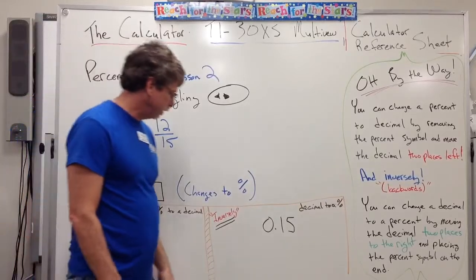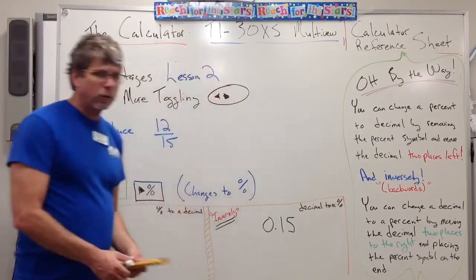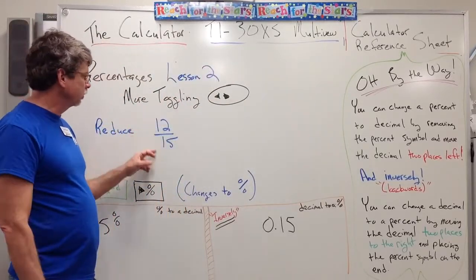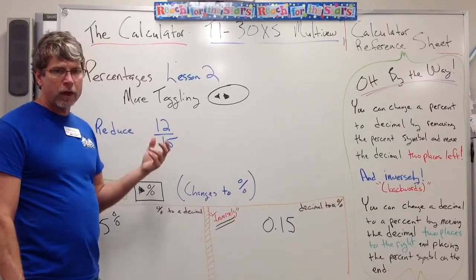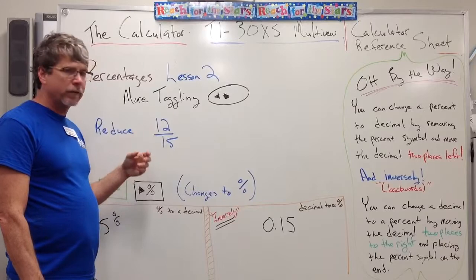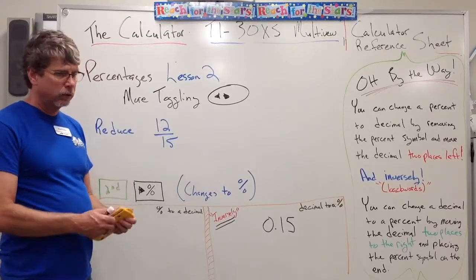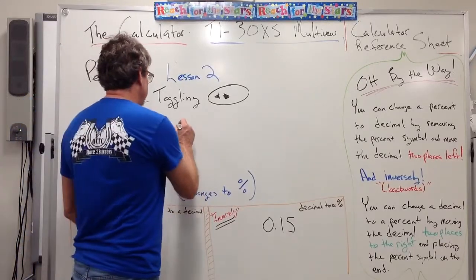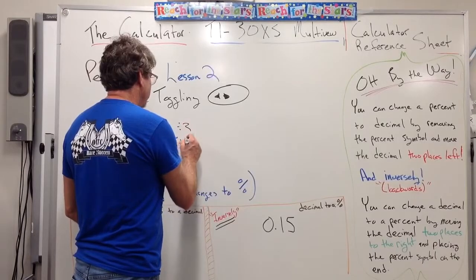Let's start with more toggling. Let's talk about reducing 12-15ths. You can reduce fractions if you can recognize what the common divisor is. A 12 and a 15 both have a common divisor of 3 in them. So if you wanted to, you could have just divided the top and bottom by 3 and done it on your own.